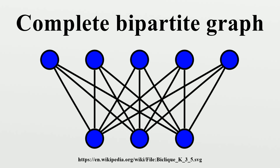The graph K3,3 is called the utility graph. This usage comes from a standard mathematical puzzle in which three utilities must each be connected to three buildings. It is impossible to solve without crossings due to the non-planarity of K3,3.